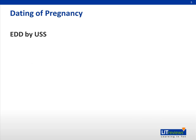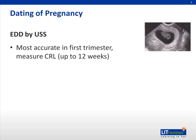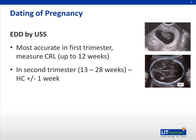So we now date all pregnancies using an ultrasound scan. It's most accurate when done in the first trimester, and we measure the CRL — which is the crown-rump length — up to 12 weeks. If the person presents in the second trimester, the head circumference is measured, which gives us the expected due date. You need to be aware that there is a plus or minus one week margin of error.